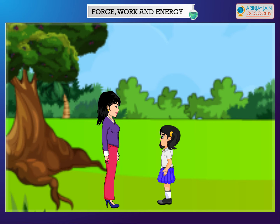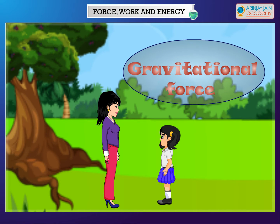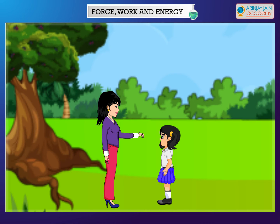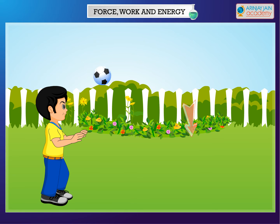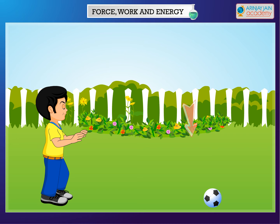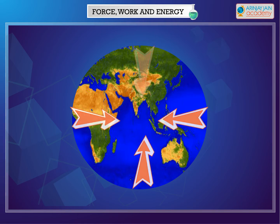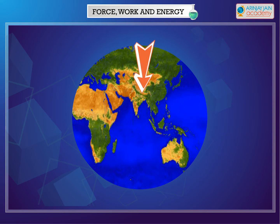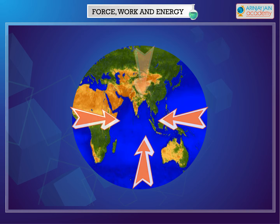The next kind is gravitational force. Whenever we throw a ball up, it always comes back to earth. This happens because the gravitational force of the earth pulls the ball back towards itself. Gravitational force is the force with which the earth pulls all objects downwards towards its center.